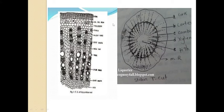When we take the transverse section of licorice root or runner, it shows presence of secondary thickening and the epidermis and cortex portion is absent.